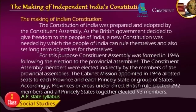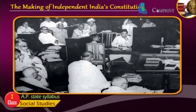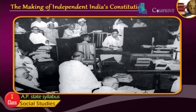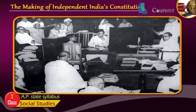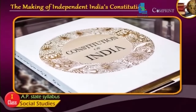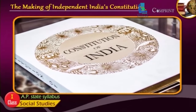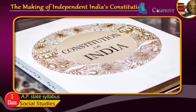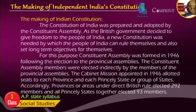The Making of the Indian Constitution: The Constitution of India was prepared and adopted by the Constituent Assembly. As the British government decided to give freedom to the people of India, a new constitution was needed by which the people of India could rule themselves and set long-term objectives for themselves. For this purpose, the Constituent Assembly was formed in 1946 following elections to the provincial assemblies.